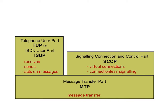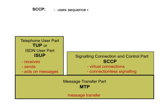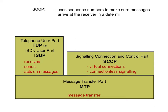ISUP and SCCP take over different tasks, but both make use of the services provided by MTP. In contrast to MTP, SCCP uses sequence numbers to make sure that messages arrive at the receiver in a determined order, so a virtual connection can be guaranteed.